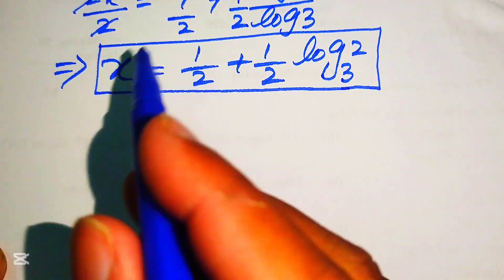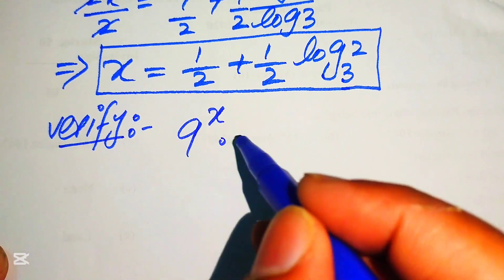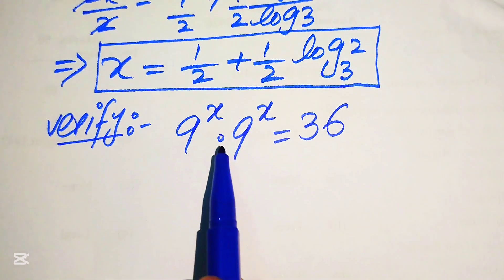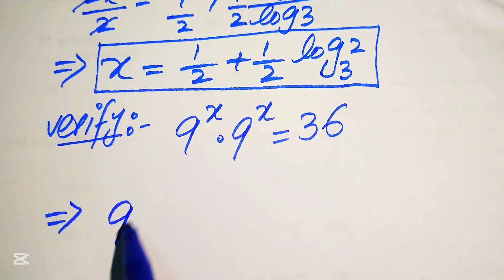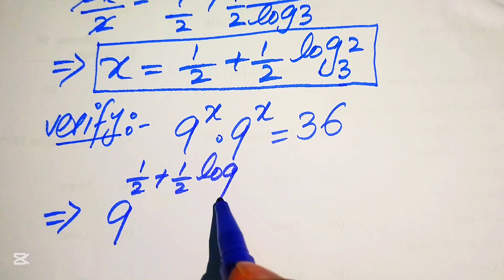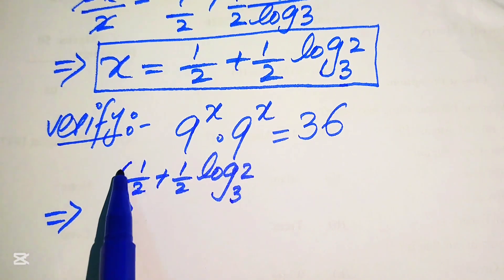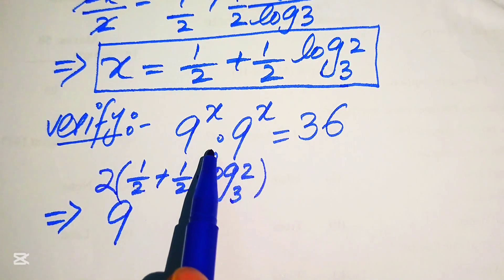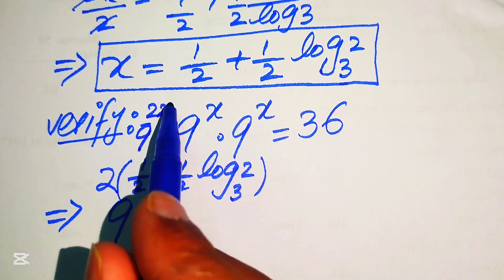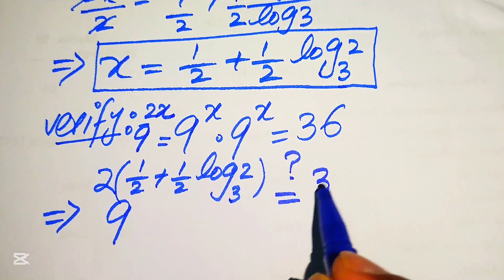We verify whether this value of x satisfies the given equation. We copy down the original statement: 9 to the power of x multiplied by 9 to the power of x equals 36. We substitute our value x equals 1/2 plus (1/2) log base 3 of 2 into the left-hand side. Since 9^x times 9^x equals 9^(2x), we substitute x and check if it equals 36.